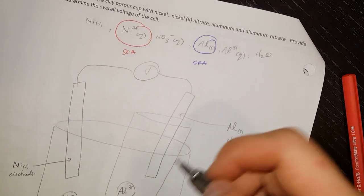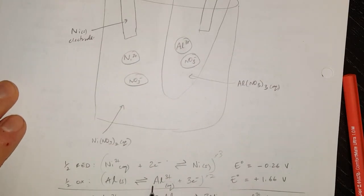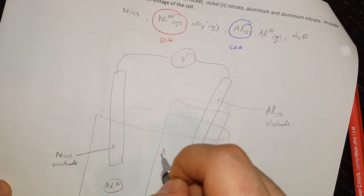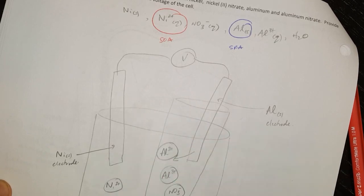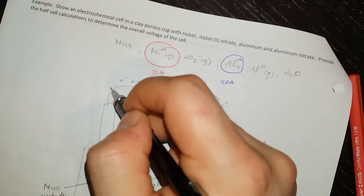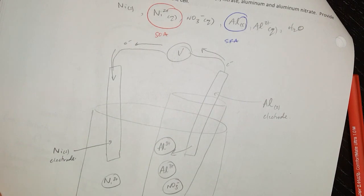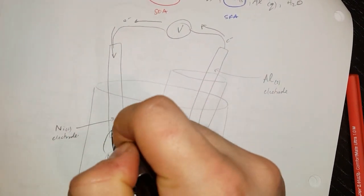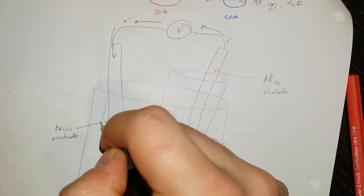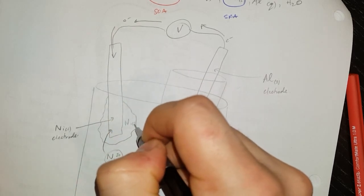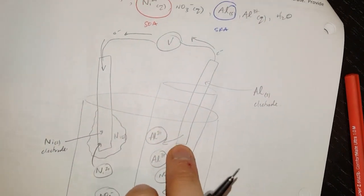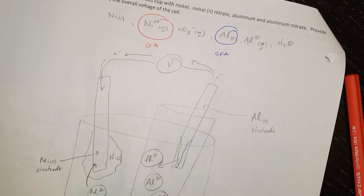The aluminum is giving up electrons, as we can see in the oxidation half-reaction, and it is forming aluminum(III) positive ions. The electrons go through the wire onto the nickel electrode. The nickel(II) positive ions pick up those electrons and form nickel solid, which means this electrode is going to grow in mass because nickel solid is being deposited on it. The aluminum electrode is giving off aluminum, so it is going to decrease in mass.